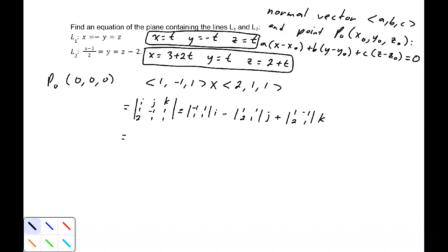Now, that should come out to be -2i, once you find those individual determinants, -2i + j + 3k.